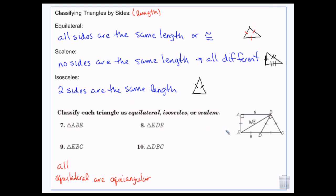Let's classify some of these on the same page in the next section. We're going to look at triangle ABE — that's this triangle right here. We want to say whether it is equilateral, isosceles, or scalene. We have one side labeled 9, one side labeled 8 times the square root of 2, and another side not labeled the same. None of the sides are the same, so it's scalene.